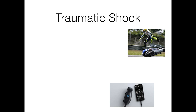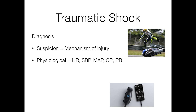So how do we diagnose traumatic shock? It can be difficult, and individual physiological parameters on their own probably aren't entirely helpful. We need to be thinking about the mechanisms of injury and kinematics of trauma first. In the case discussed during the session, a patient came off their motorcycle at speed, and the potential for traumatic shock was recognised early before hospital arrival. Physiological parameters such as heart rate, systolic blood pressure, mean arterial pressure, capillary refill, and respiratory rate, in combination, can be very helpful — but in isolation, each one isn't particularly reliable for diagnosis.